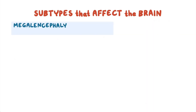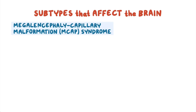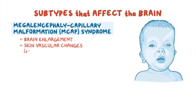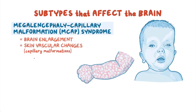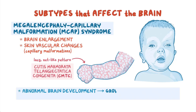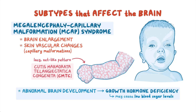And megalencephaly capillary malformation, or MCAP, syndrome, which involves brain enlargement in conjunction with skin vascular changes, usually capillary malformations, which may take on a particular lacy net-like pattern, called cutis marmorata telangiectatica congenita, or CMTC. Abnormal brain development can lead to growth hormone deficiency, which may cause low blood sugar levels.